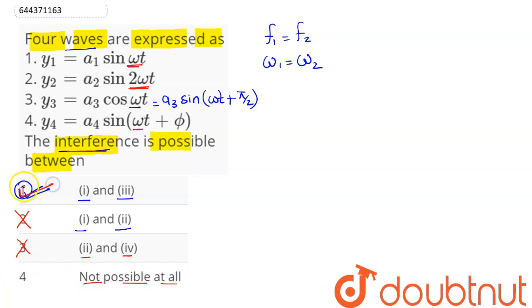Here we can see in option 1 it is possible that first and third wave can superpose as they have same frequency or same angular frequency. So for interference frequency should be same is the criteria. Hence option number 1 is the correct answer.